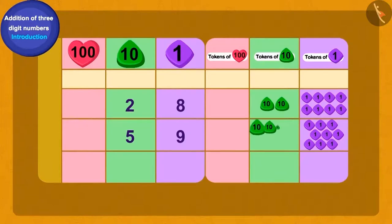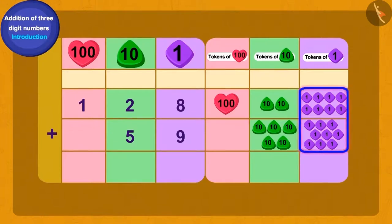First, we will write one twenty-eight and fifty-nine using tokens. Is this correct, children? We have a total of seventeen tokens of ones. Now, how do we write this? We can add ten of ones tokens and get one token of tens. How many ones tokens left? We have seven ones tokens left.